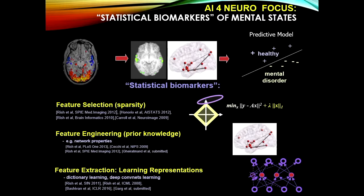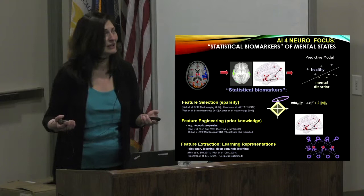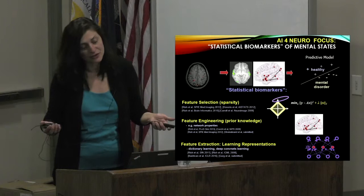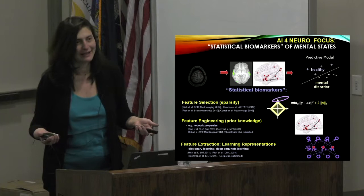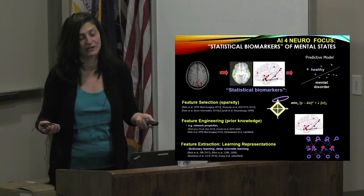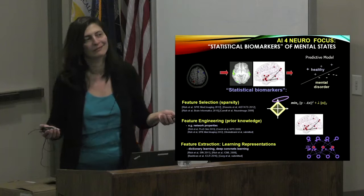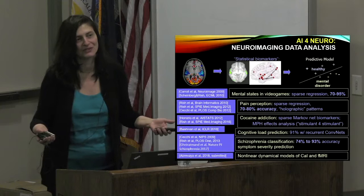Feature extraction can be done in various ways: simple selection of important voxels, sparse regression models like LASSO. For disorders like schizophrenia — a network disorder rather than a problem with a particular area — you look for network features. With network features you might achieve 93% accuracy discriminating schizophrenia patients from controls, while just brain activations in response to a task give you much less. This motivates automatic feature extraction through deep learning and hidden variable models.